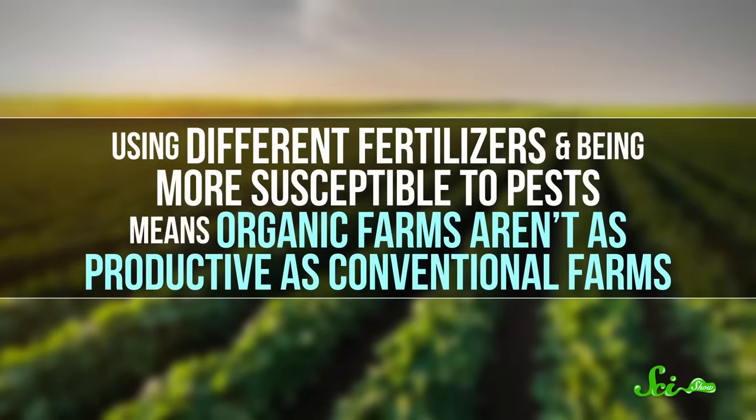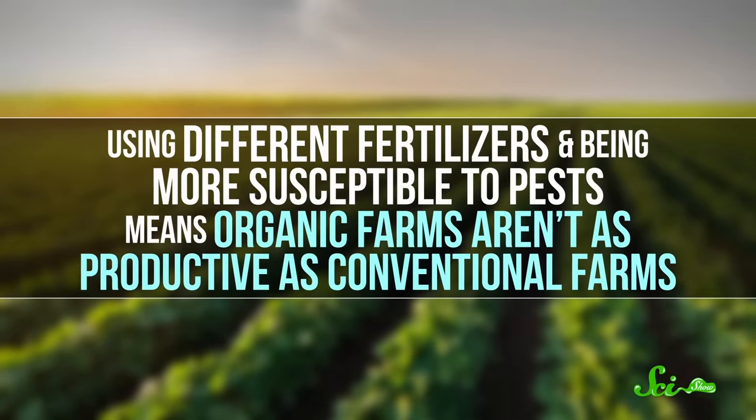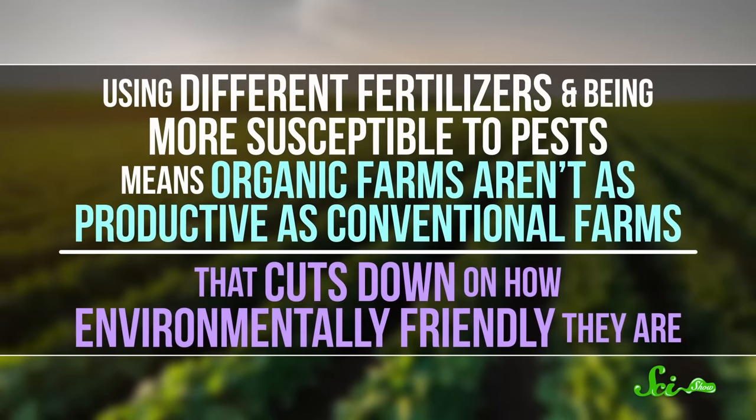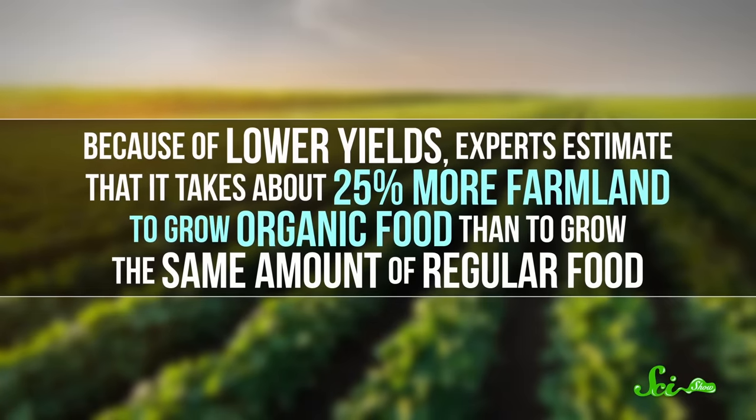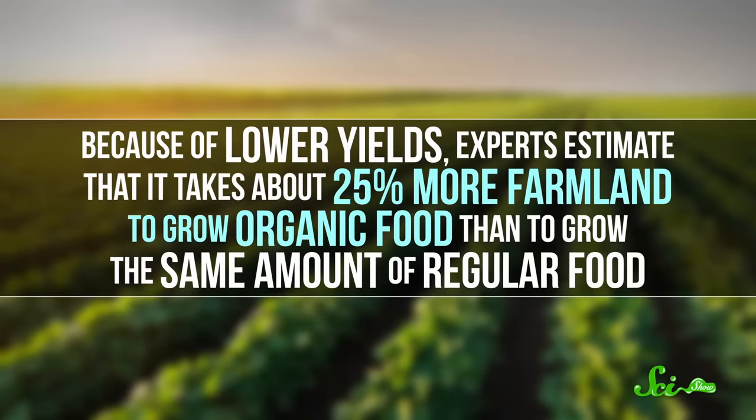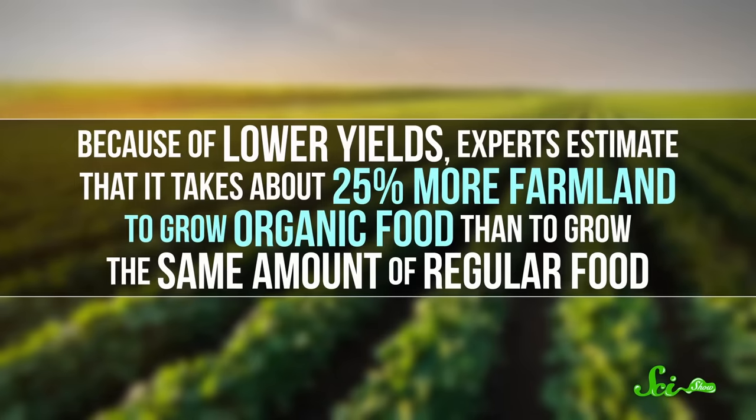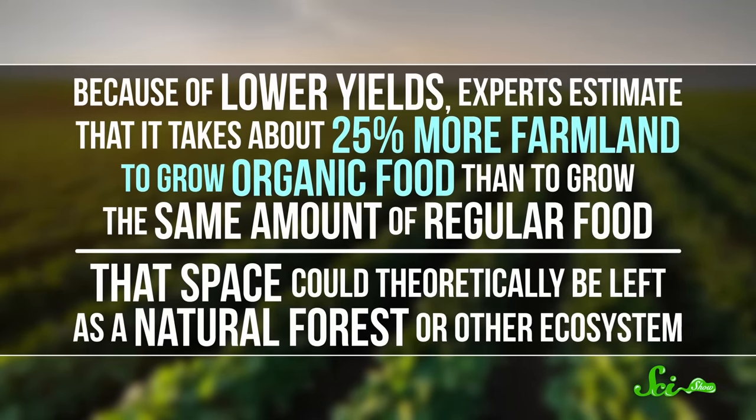The biggest of these has to do with yield. Using different fertilizers and being more susceptible to pests means organic farms aren't as productive as conventional farms. And that cuts down on how environmentally friendly they are. Because of lower yields, experts estimate that it takes about 25% more farmland to grow organic food than to grow the same amount of regular food. And that space could theoretically be left as a natural forest or other ecosystems.